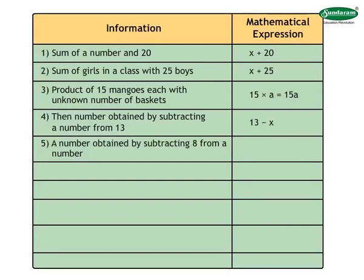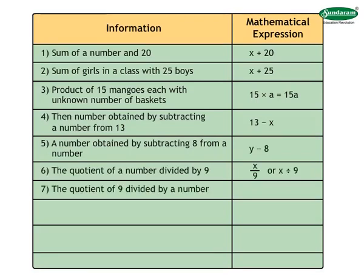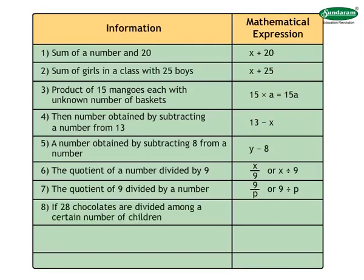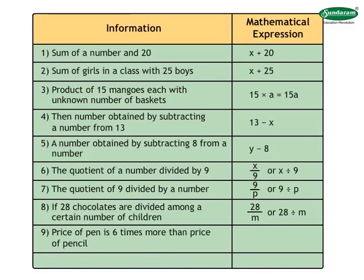The number obtained by subtracting a number from 13 can be expressed as 13 minus x. A number obtained by subtracting 8 from a number can be expressed as y minus 8. The quotient of a number divided by 9 can be expressed as x upon 9. The quotient of 9 divided by a number can be expressed as 9 upon p. If 28 chocolates are divided among a certain number of children, then it is expressed as 28 upon m. Price of pen is 6 times more than price of pencil can be expressed as 6 into l equals to 6l. Speed of a car is 30 more than scooter can be expressed as x plus 30.